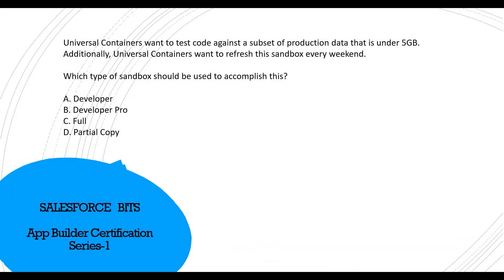Universal Container wants to test code against a subset of production data that is under 5GB. Additionally, they want to refresh this sandbox every weekend. Which type of sandbox should be used — Developer, Developer Pro, Full, or Partial Copy? Developer and Developer Pro refresh within one day and have limited storage. Full Copy requires a 29-day refresh cycle. The Partial Copy sandbox is the right answer: it supports up to 5GB of data and can be refreshed approximately every week.